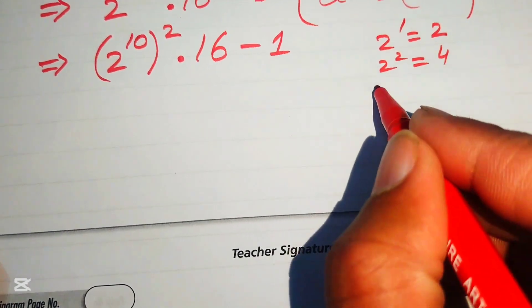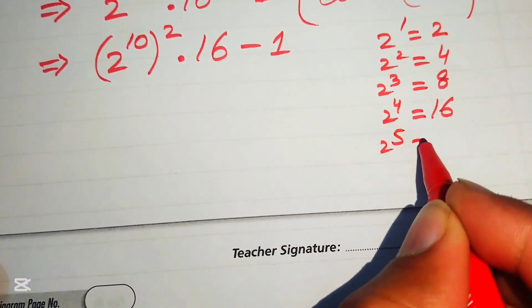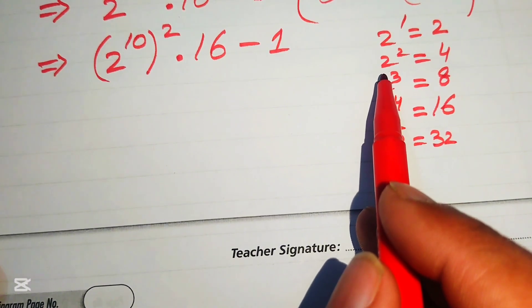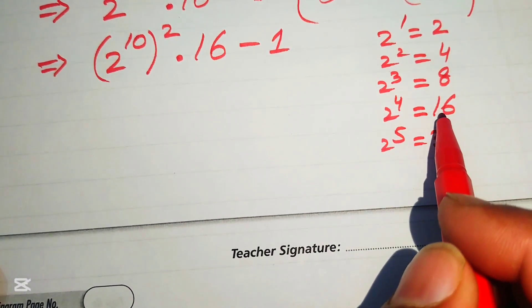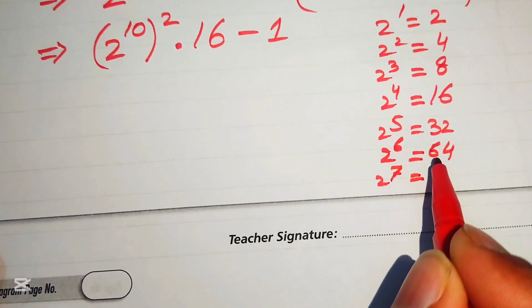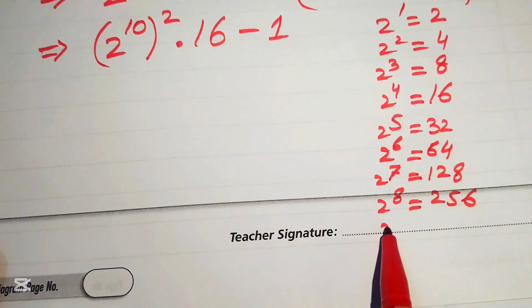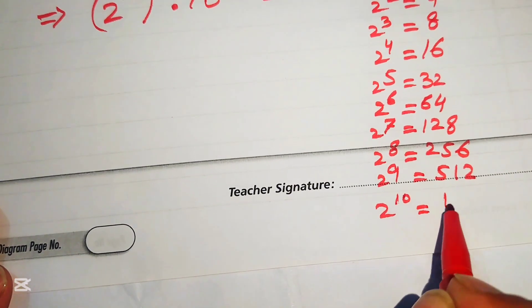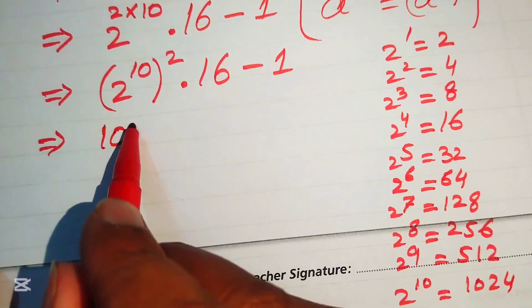Starting from 2¹ = 2, 2² = 4, 2³ = 8, 2⁴ = 16, 2⁵ = 32. Each next power is just the previous value multiplied by 2: 2⁶ = 64, 2⁷ = 128, 2⁸ = 256, 2⁹ = 512, and 2 to the power of 10 equals 1024.